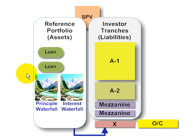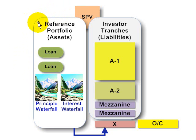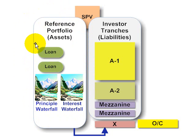To do that, I've simplified my diagram into a generic securitization structure, so I'm not showing several of the key players, including the underwriter, the trustee, the collateral manager. Rather, this is just a balance sheet perspective. So on the left, we have a reference portfolio, which contains the credit-sensitive assets.